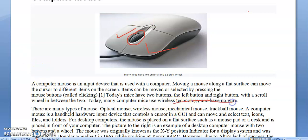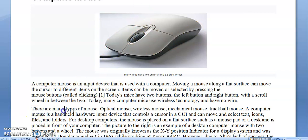Many computer mice use wireless technology and have no wire. These days we have Bluetooth mouse or wireless mouse which can be attached to a computer. There are many types of mouse: optical mouse, wireless mouse, mechanical mouse, and trackball mouse.